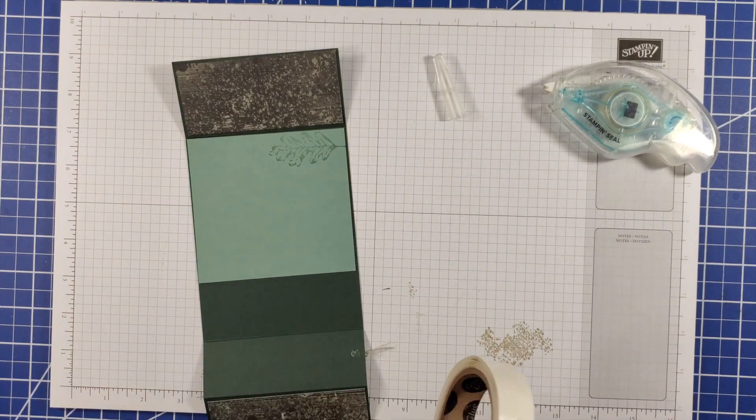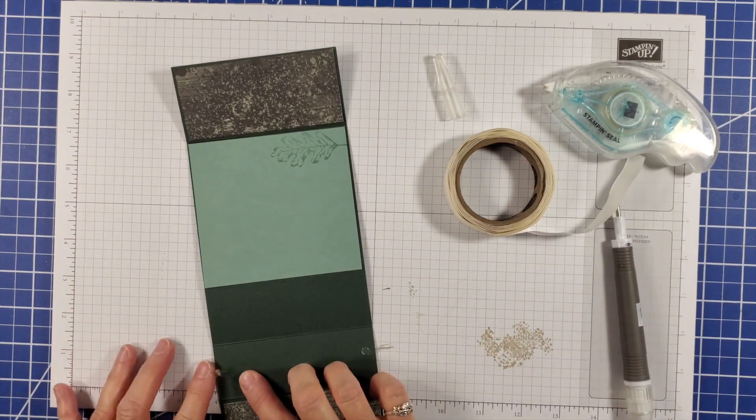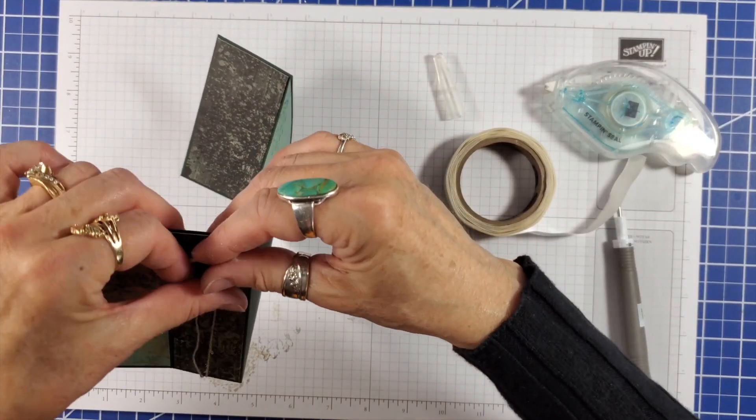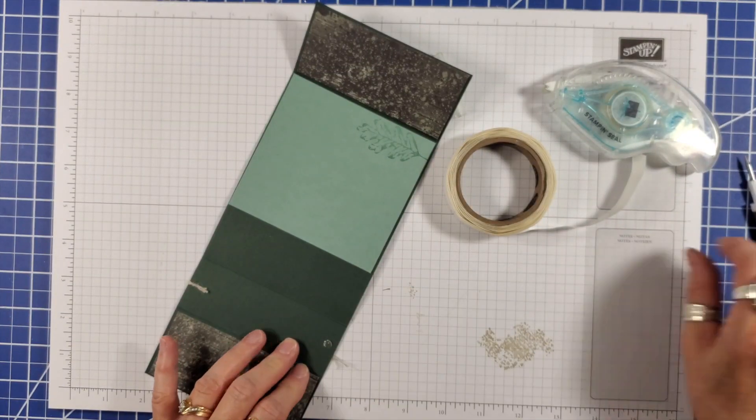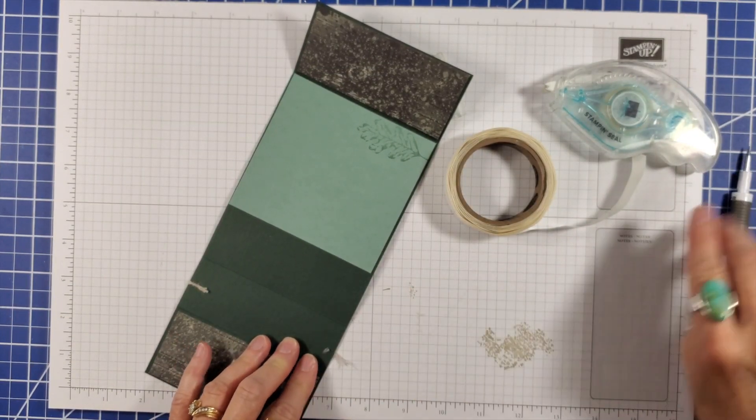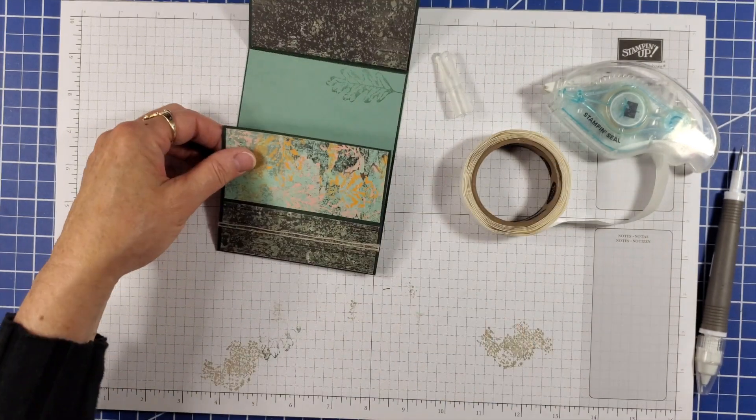I used glue dots on the inside panel to adhere two pieces of linen thread before I sealed the panel shut, creating the book fold. Double checking that my linen thread is straight.